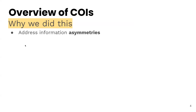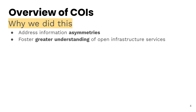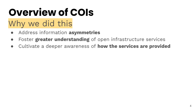When doing our research, it became really clear that there are some significant information asymmetries. There are a lot of unknowns out there when someone's trying to find a service to accomplish certain research tasks and integrate it. There's a lot about what services are out there, how they're organized, what different features they have — it's kind of hard to access. In some cases, the information isn't readily available or isn't clearly presented. So we wanted to really address this in the hopes of fostering greater understanding of open infrastructure services — what services are out there and some important features about them when making a decision, whether you're a funder or a potential user. We also wanted to cultivate a deeper awareness of how services are provided: the organization behind them, how they're structured, how they're governed, how they're financed, and how they do what they do.